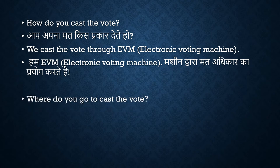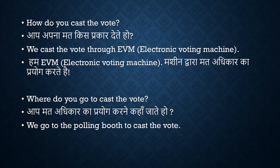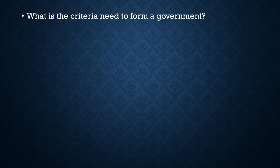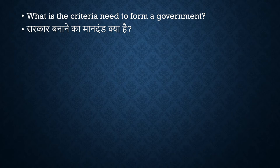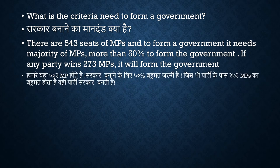How do you cast the vote? Aap mat adhikar ka prayog karne kahaan jaate ho? We go to the polling booth to cast the vote. There are 543 seats of MPs, and to form the government, it needs a majority — more than 50%. If any party wins 273 MPs, it will form the government. Hamare yaan 543 MPs hote hain. Sarkar banane ke liye 50% bahumat zaruri rehti hai.